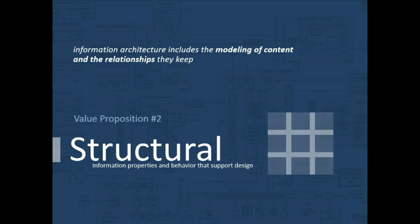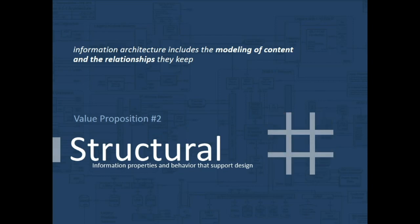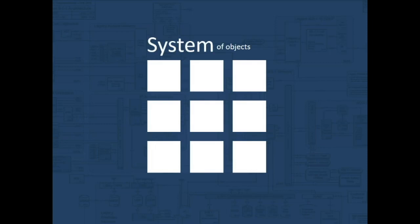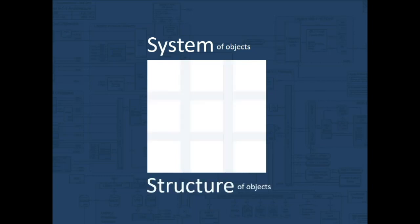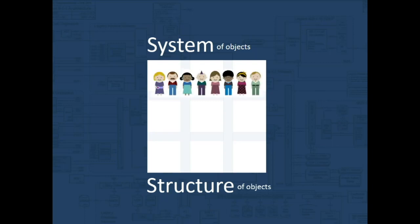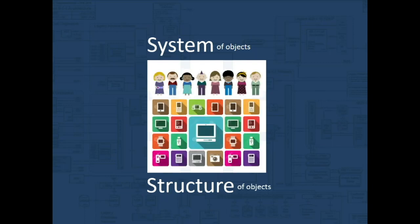We're looking at the things and the space in between the things. To sum it up, we're looking at systems of objects, the structure of those objects within that system, and we're doing this because there are a lot of people who want to use a lot of different devices and need to get access to information in many different ways.